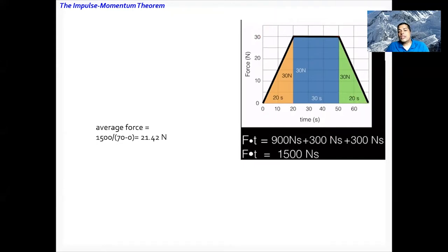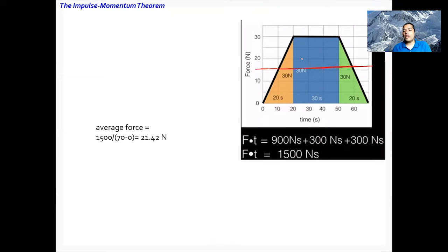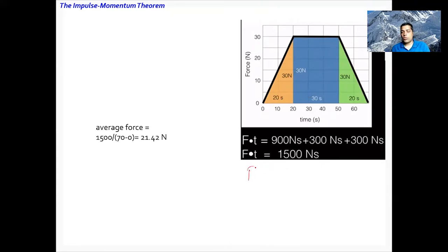Since the force is variable, to figure out the overall effect of a force over time we need to find the average force. To find the average force, you first find the area under the curve and then divide by time. That gives you the average force — that's the definition.